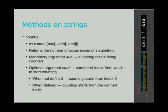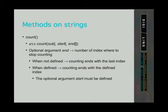The count method returns the number of occurrences of a substring. The first mandatory argument is the substring we want to see how many times it occurs. The second argument defines the index from which to start counting — if left out, the program starts from index 0. If we define the start argument, we can also define the end argument, which defines the last index for counting. If left out, the program counts until the last character.